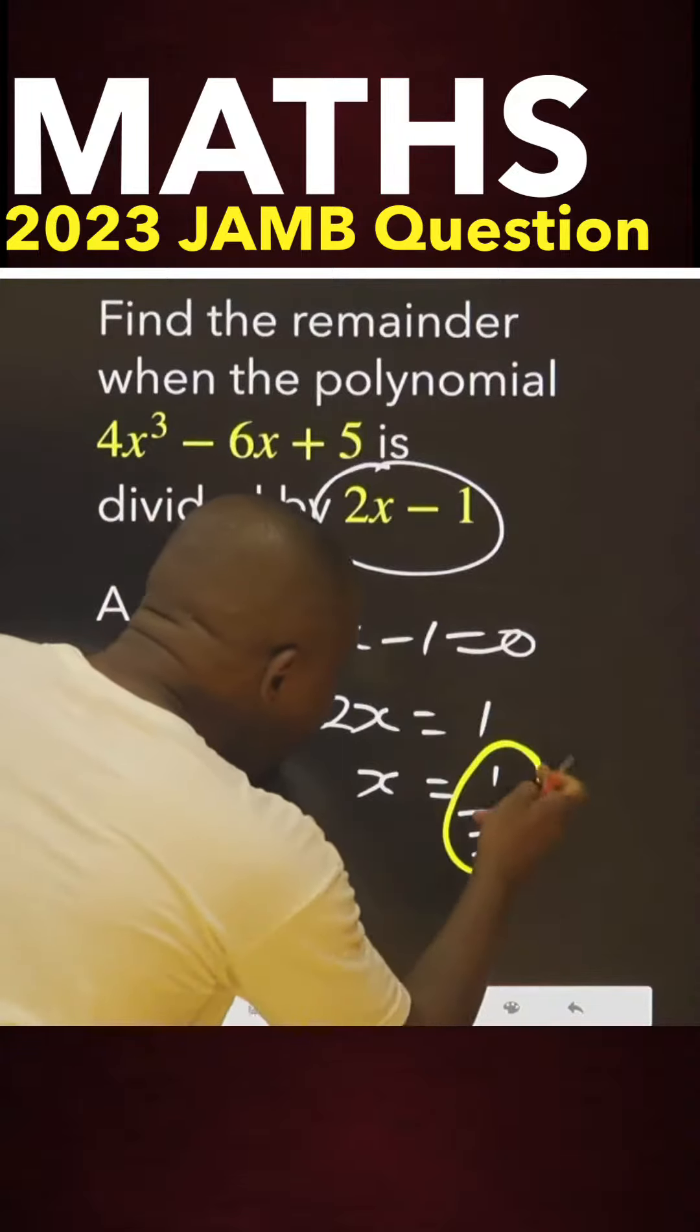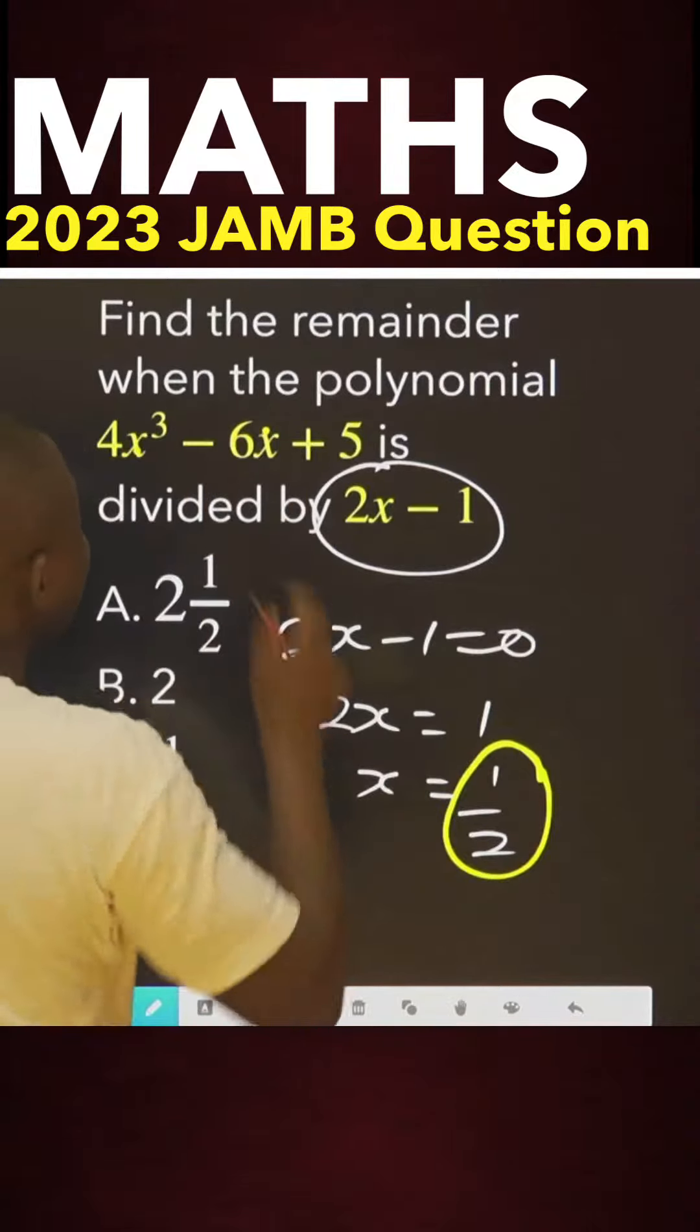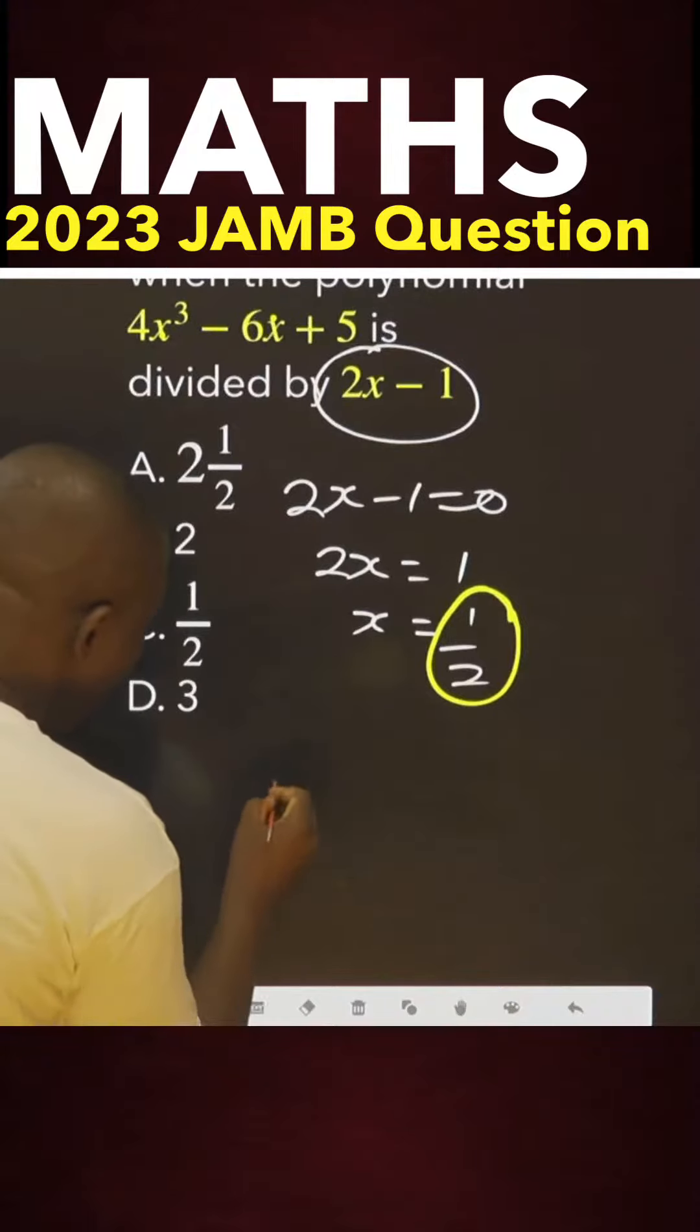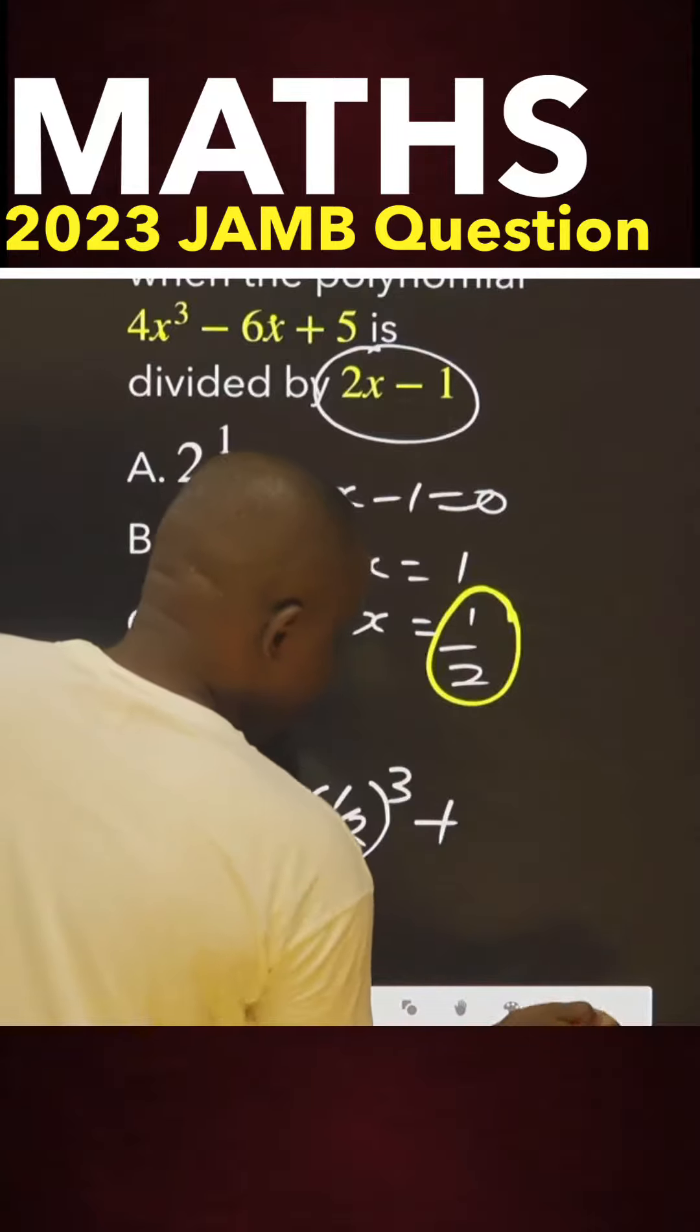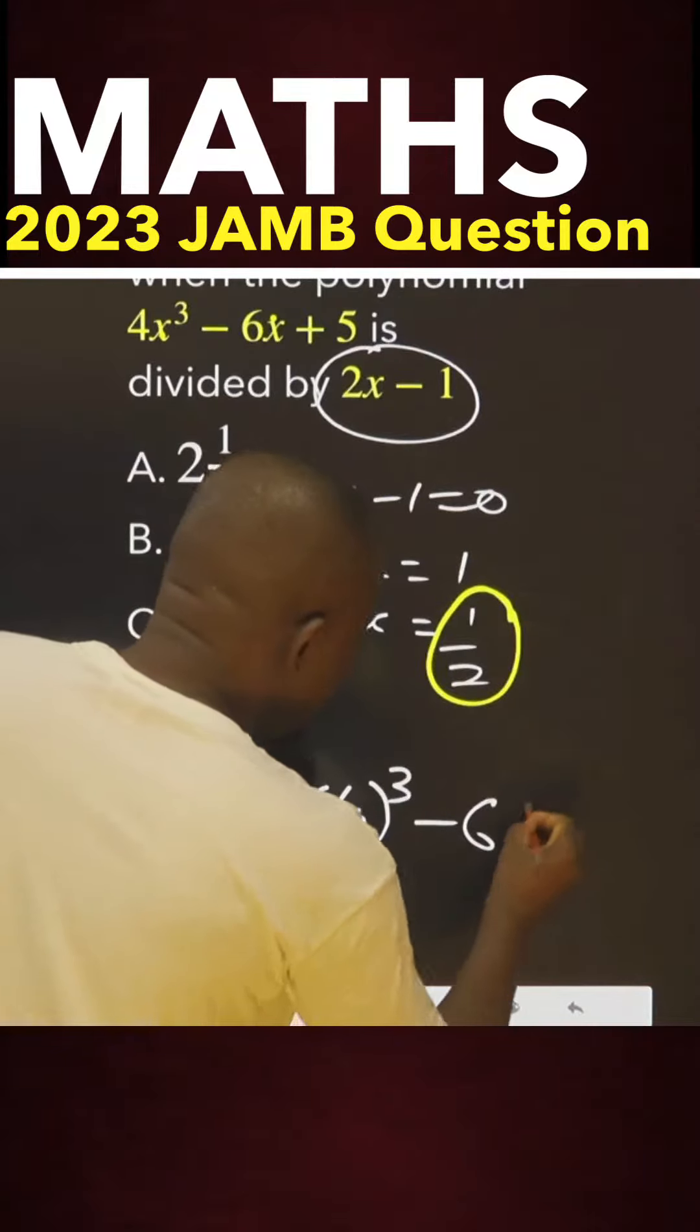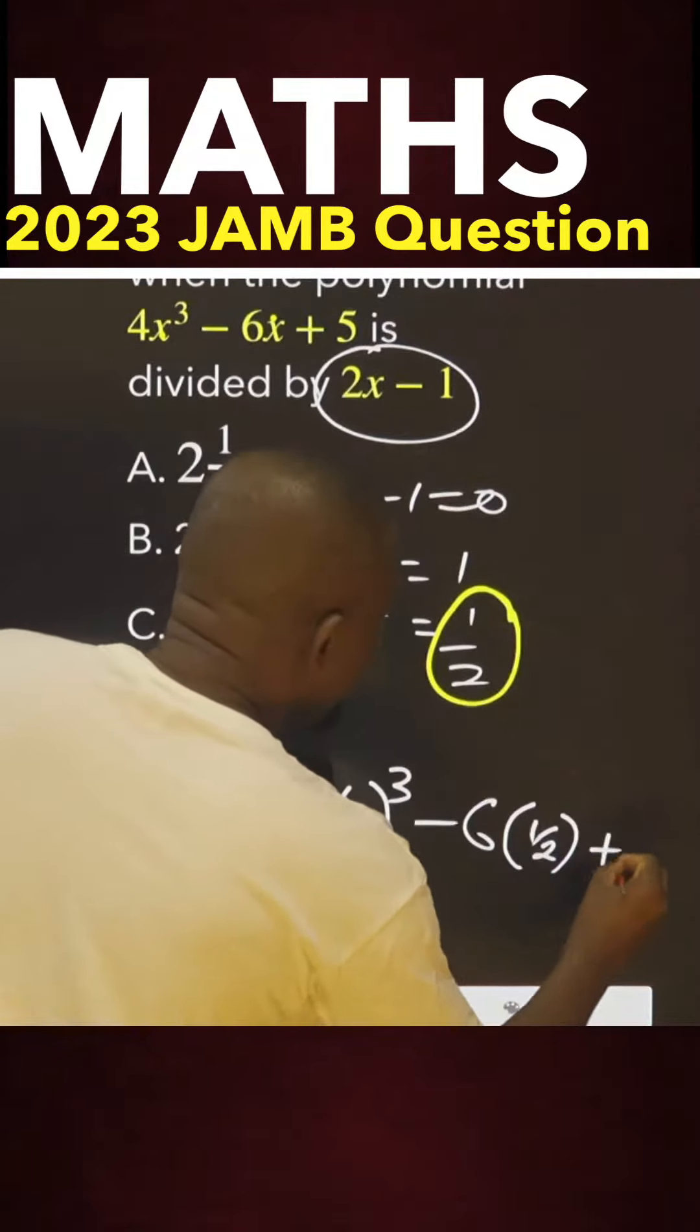This value you get for x, substituted in place of x here. Very simple. 4 times 1 over 2 raised to power 3, minus 6 times 1 over 2 plus 5.